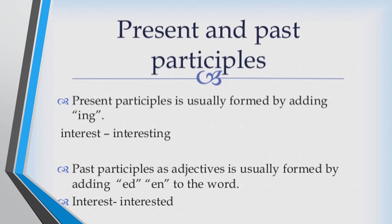Let's move on to participial adjectives. What are participial adjectives? Participial adjectives function like adjectives and are classified into present participles and past participles. To form the present participle, we add -ing to the verb. To form the past participle, we add -ed or -en to the word. For example: interest — interested. That is the past participle form.